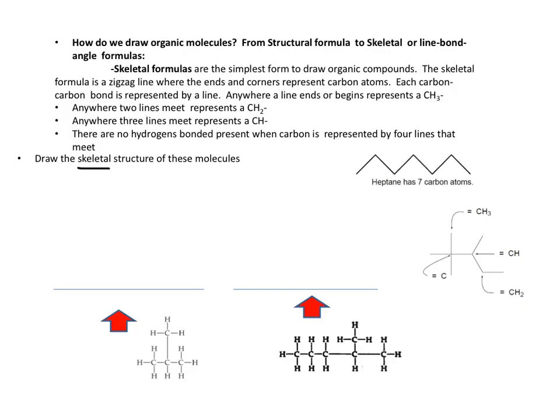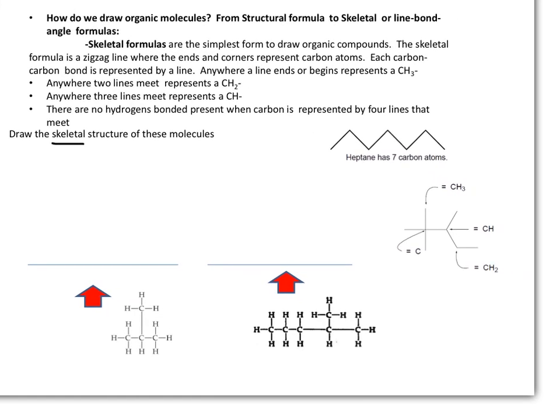Let's convert some expanded structures into a skeletal form. This one is the molecule of isobutane. It has four carbons, so we need to make a zigzag for the hydrocarbon chain. It's three carbons long. So we have three carbons long and only one branch.